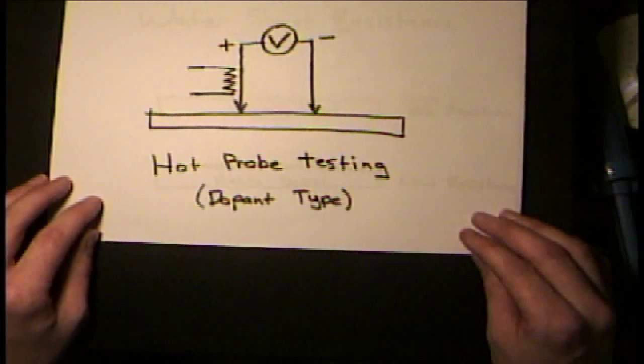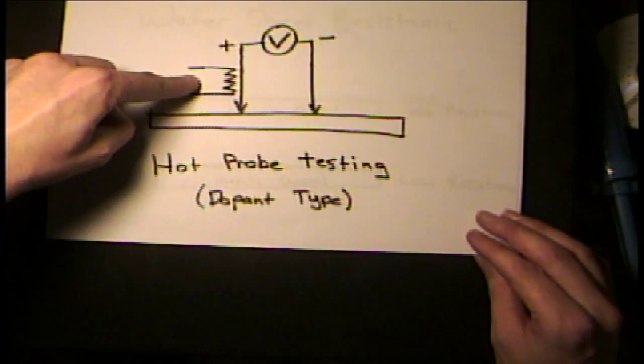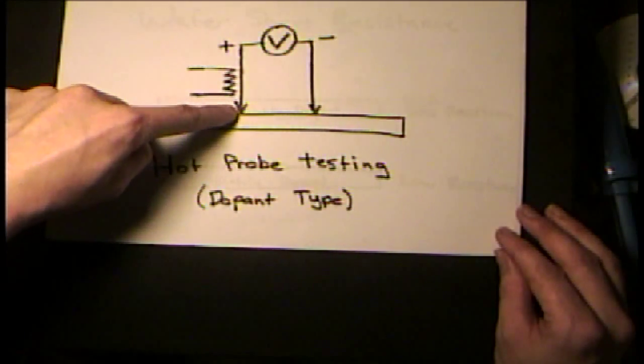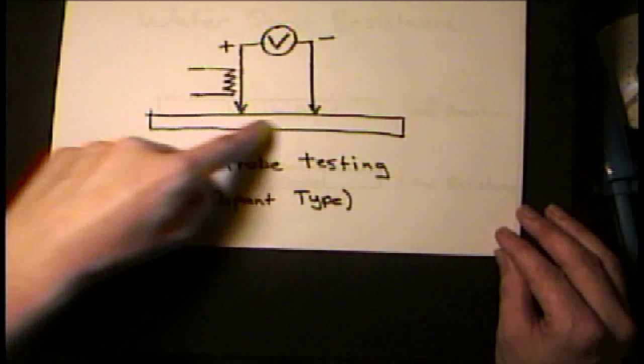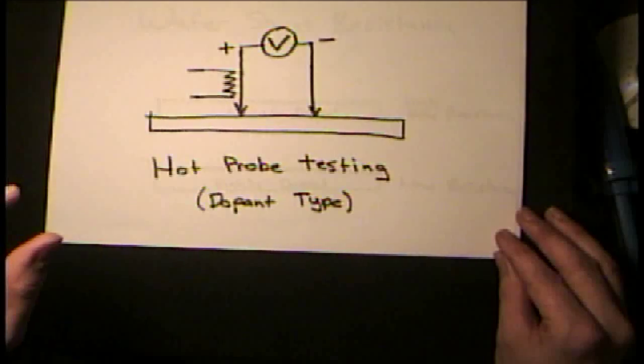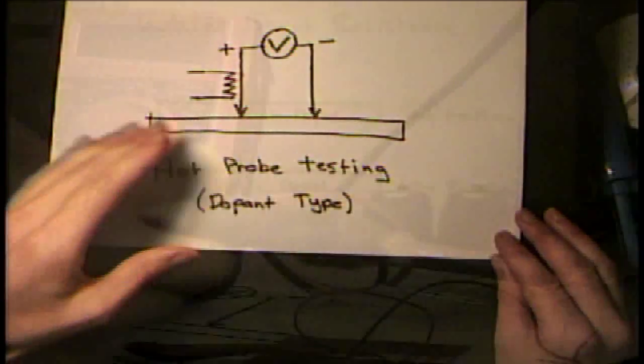You can do this with a voltmeter and a soldering iron or a heater of some sort. Basically, what you do is you push two probes into the surface of the wafer, this being the wafer here, and then you heat one of the probes and you don't heat the other probe, and you'll see the meter either swing negative or positive.